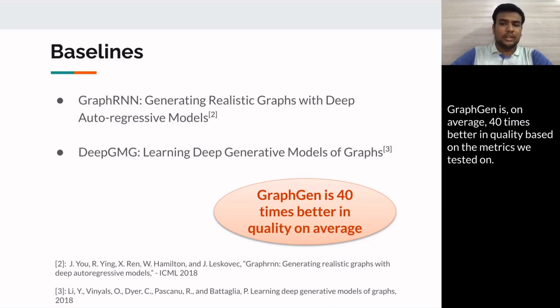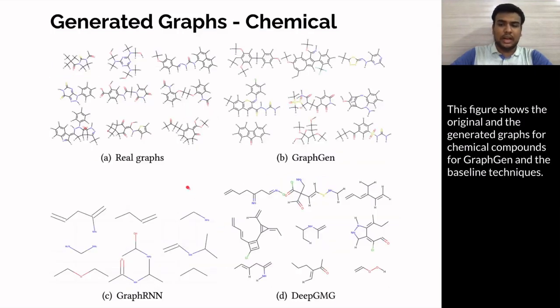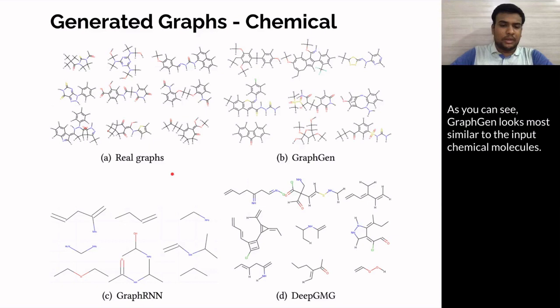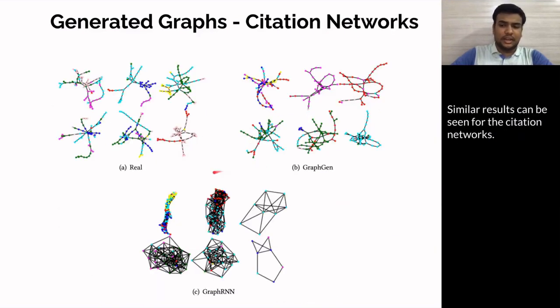This figure shows the original and the generated graphs for chemical compounds for GraphGen and the baseline techniques. As you can see, GraphGen looks the most similar to the input chemical molecules. Similar results can be seen for the citation networks.